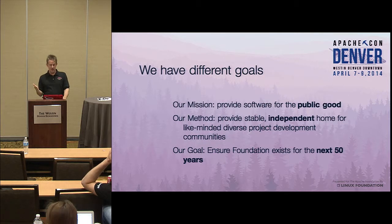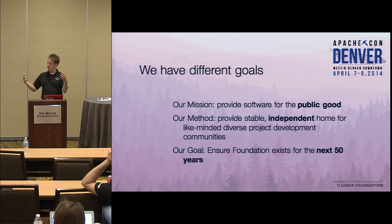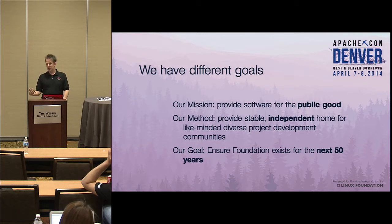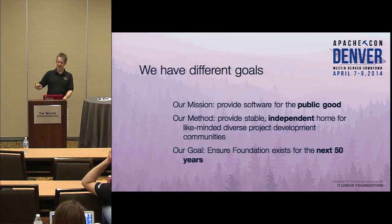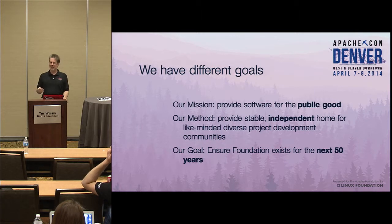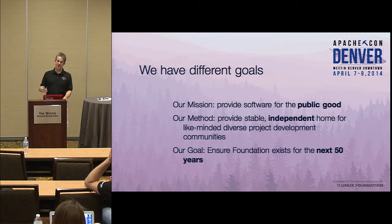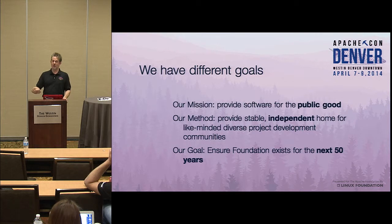The method we use is also critical: the foundation will provide a stable and independent home for like-minded project communities. We provide the projects with the services they need and the backup for continuing that governance model. It's really the communities who are doing our work — we enable that to happen. The foundation doesn't have a directional five-year plan. We don't pick the projects that come to us. Our goal is to be here in 50 years, because if we're still here in 50 years, we will still have interested project communities creating innovative software that we can give away for the good of the world. This is the why of Apache.